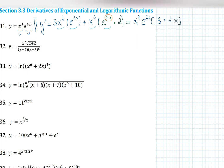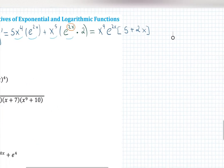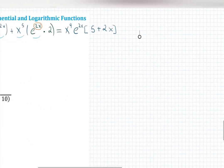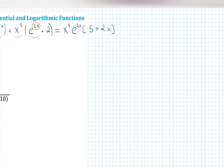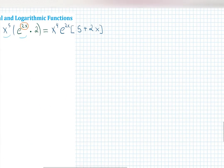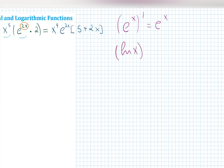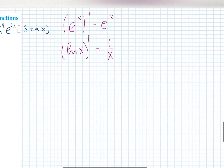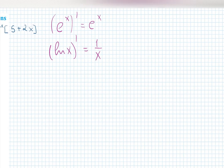Let me just make a note in case you forgot: the derivative of e to the x is e to the x, and the derivative of ln x is 1 over x. We're going to be using these a lot.